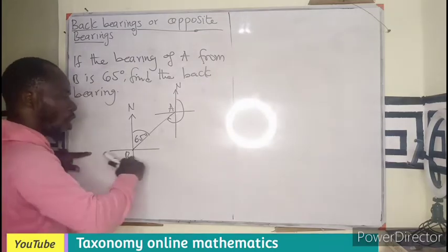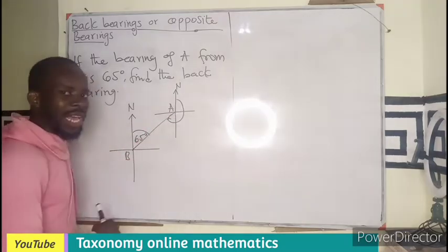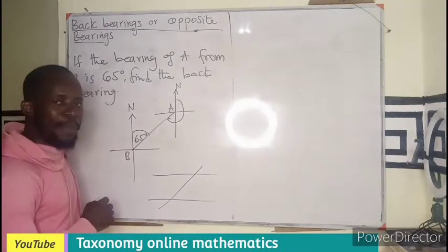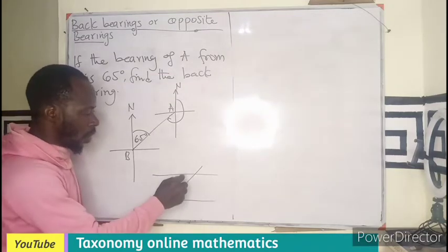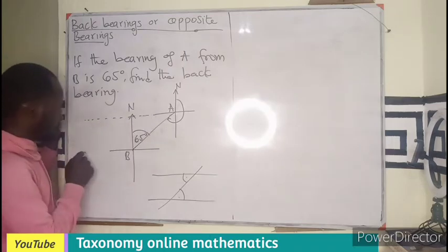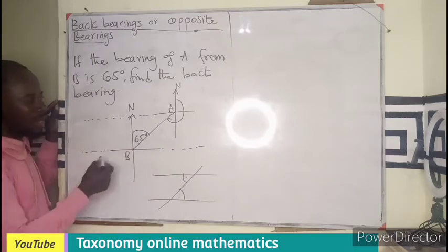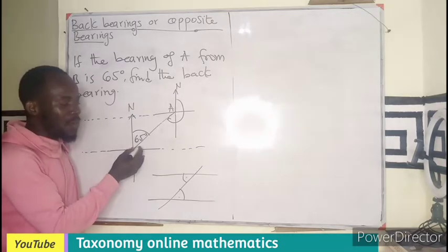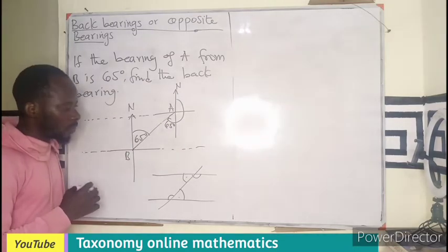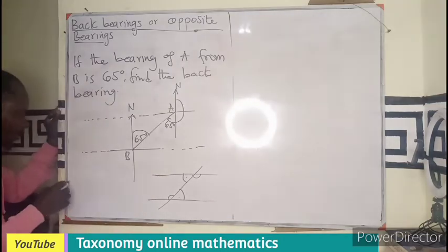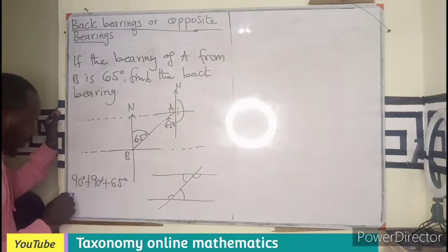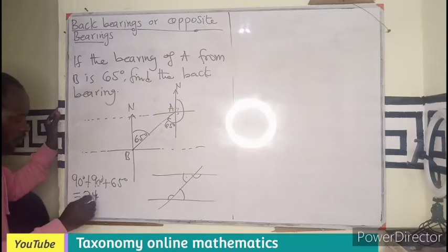The north lines are parallel straight lines. When a transversal is drawn through them, it produces alternate angles. The angle at B alternates to the angle at A, so the 65-degree angle is replicated at A. Therefore, the bearing of B from A is 90 plus 90 plus 65 degrees, which equals 245 degrees.